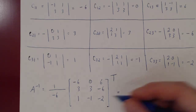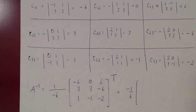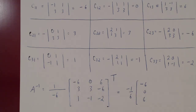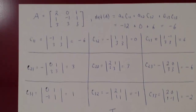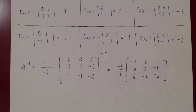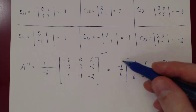Now let's transpose. We write this as negative 1 over 6. When we transpose, rows become columns: the first row negative 6, 0, 6 becomes the first column; the second row 3, 3, negative 6 becomes the second column; and the third row 1, negative 1, negative 2 becomes the third column. We leave the negative 1 over 6 out front as a scalar multiple, since not every number is divisible by 6. This is how you use the adjoint formula.